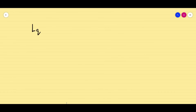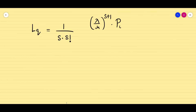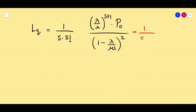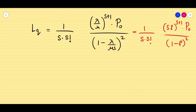The next formula is Lq. In this multi-server model, we first find Lq, then build all other formulas from it. Lq equals (1/(s · s!)) · (lambda/mu)ˢ⁺¹ · P₀ divided by (1 minus lambda/mu·s)². In rho notation: Lq equals (s·rho)ˢ⁺¹ · P₀ divided by (s · s! · (1 minus rho)²). You can use whichever form you like.